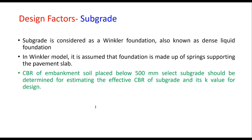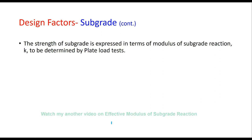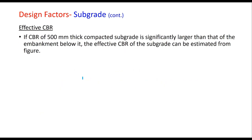In concrete pavement analysis, the subgrade is treated as a Winkler foundation, also known as a dense liquid foundation, where the foundation is modeled as springs supporting the pavement slab. The CBR of embankment soil placed below 500 mm of subgrade should be determined to estimate the effective CBR of subgrade and its k value for design. Strength of subgrade is expressed in terms of the modulus of subgrade reaction (k), determined by plate load test. IRC 58 suggests a relationship between k value and CBR for homogeneous soil subgrade. If the CBR of the 500 mm compacted subgrade is significantly larger than that of embankment below, the effective CBR can be estimated from a corresponding figure.